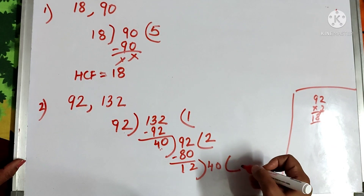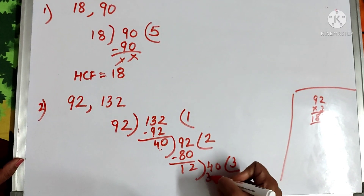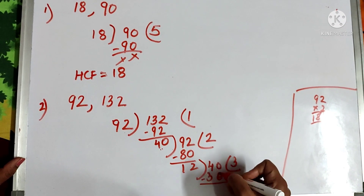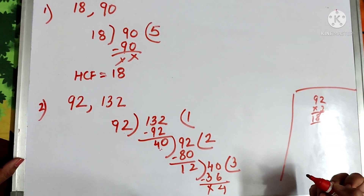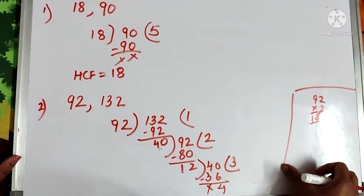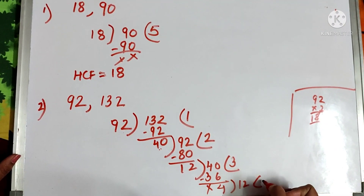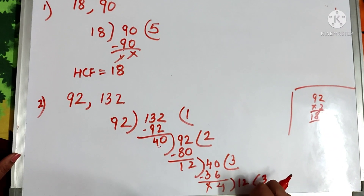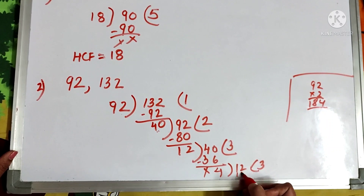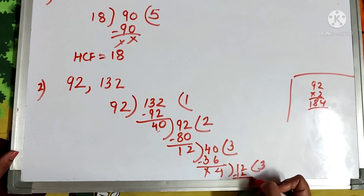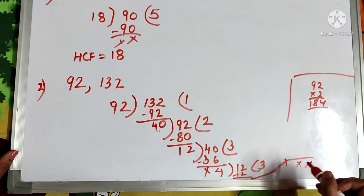Now 12 ones are 12, 12 twos are 24, 12 threes are 36 — so it goes by 3, giving 36. The remainder is 40 minus 36 = 4. Next, 4 is divided into 12: 12 ones are 12, giving quotient 1 and remainder 12 minus 12 = 0. We got the remainder as 0.